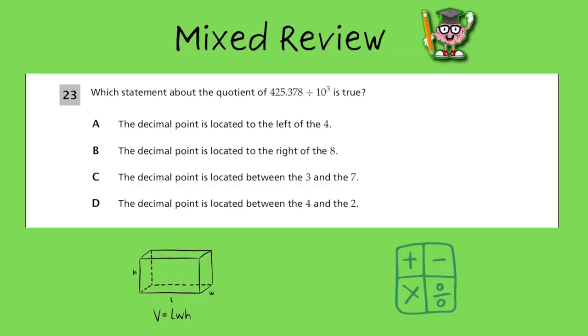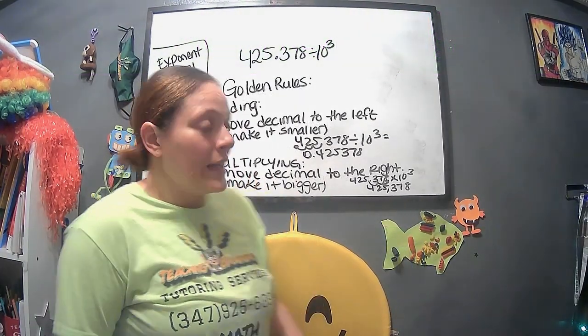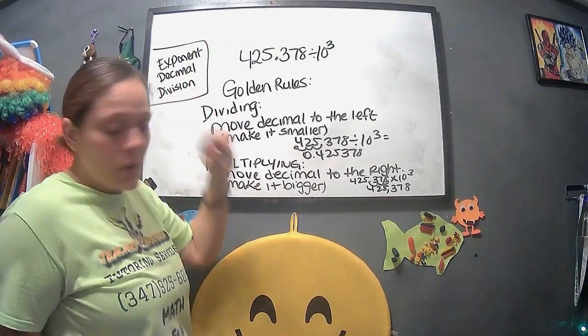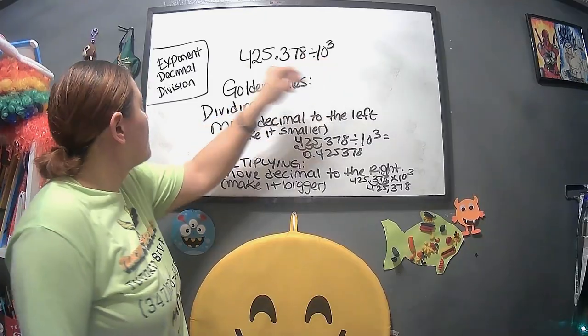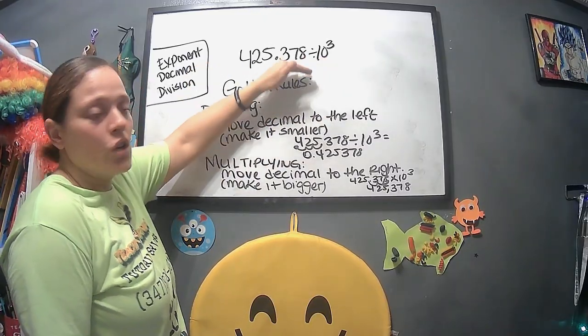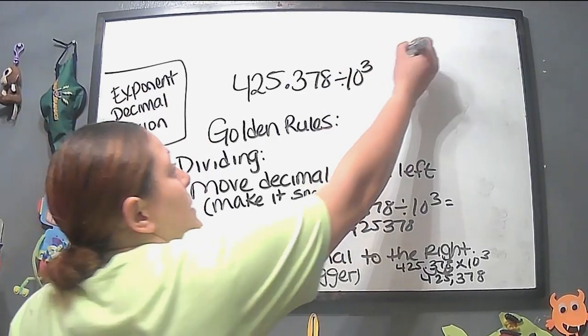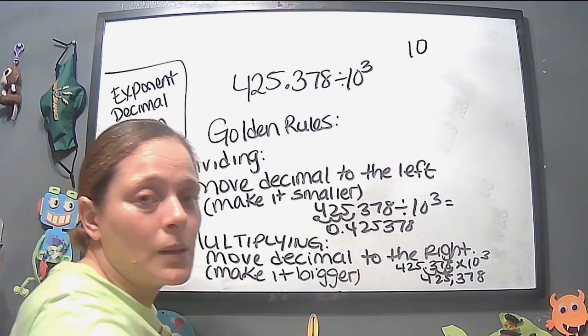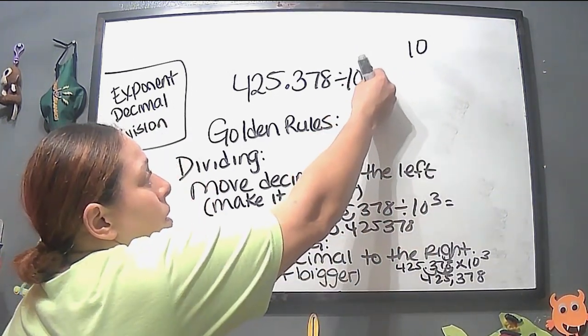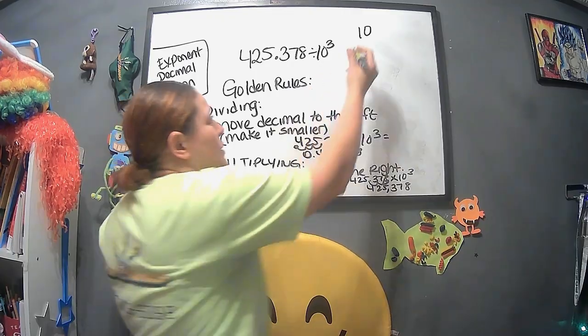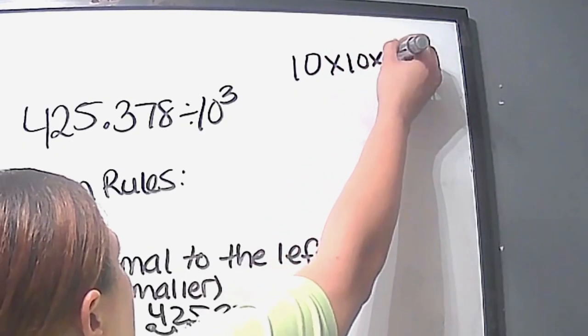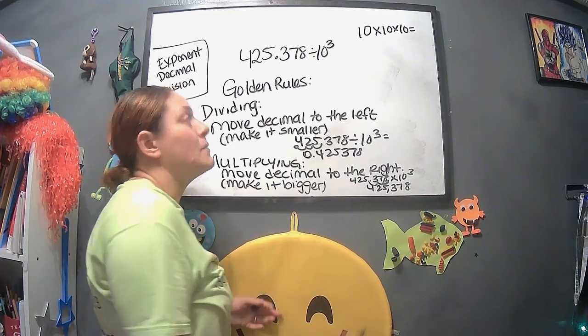That's it. Which statement about the quotient of 425.378 divided by 10 to the 3rd is true? We have three things going on here. We have exponent, which is the 10 to the 3rd, which I'll explain in a minute. Decimal, which we talked about earlier. And then we have division. An exponent, if you didn't already know, it means that that number is multiplied by itself. This amount of times. So if it's 10 to the 3rd, that means it's 10 times 10 times 10, which if we multiplied all that out and did all the math, we would know that it'll be 1,000.